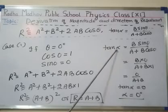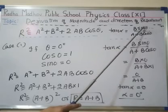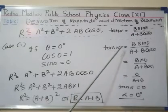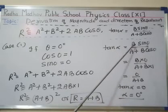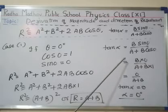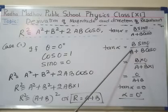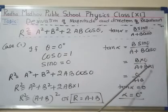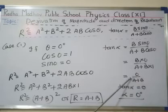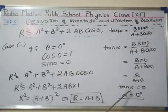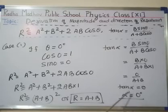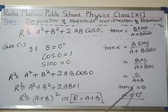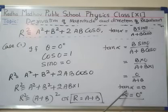Similarly, for the angle: putting sin0° = 0 into the angle formula, tan α = b·sin0° / (a + b·cos0°) = b×0 / (a + b×1) = 0 / (a + b). So tan α = 0, which means α = 0°. This tells us that the resultant vector r acts along the same direction as vector a and vector b.